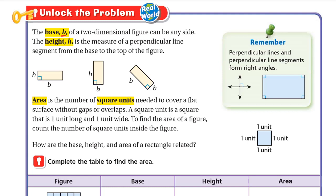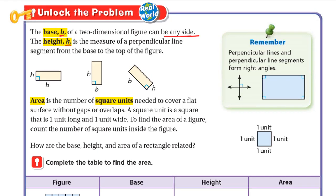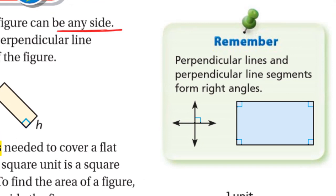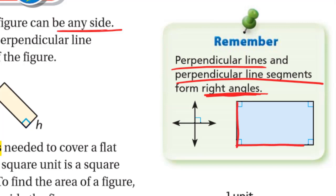The base B of a two-dimensional figure can be any side, so the base can be any side in the figure. And we have something called the height — it is the measure of a perpendicular line segment from the base to the top of the figure. Remember that perpendicular lines or perpendicular line segments form right angles. So one side is the base B and the other will be the height H.